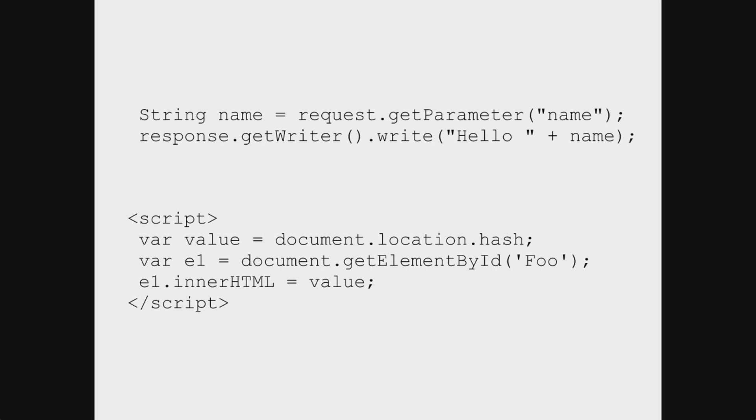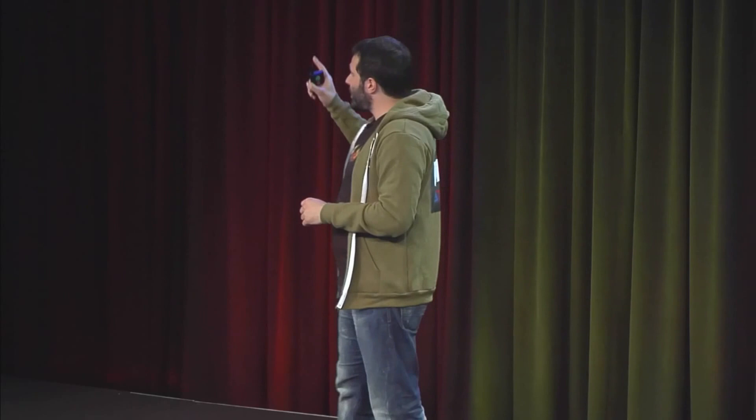The second one is the most interesting one — it's the new school XSS. Everything there happens inside the browser. The payload lives inside document.location.hash, which is the part of the URL after the hashtag that is never sent to the server, so you don't even see it happening from a server perspective. And then it gets echoed back inside the DOM and executed through the innerHTML statement. Keep this in mind when we go through this presentation — it's going to be useful.